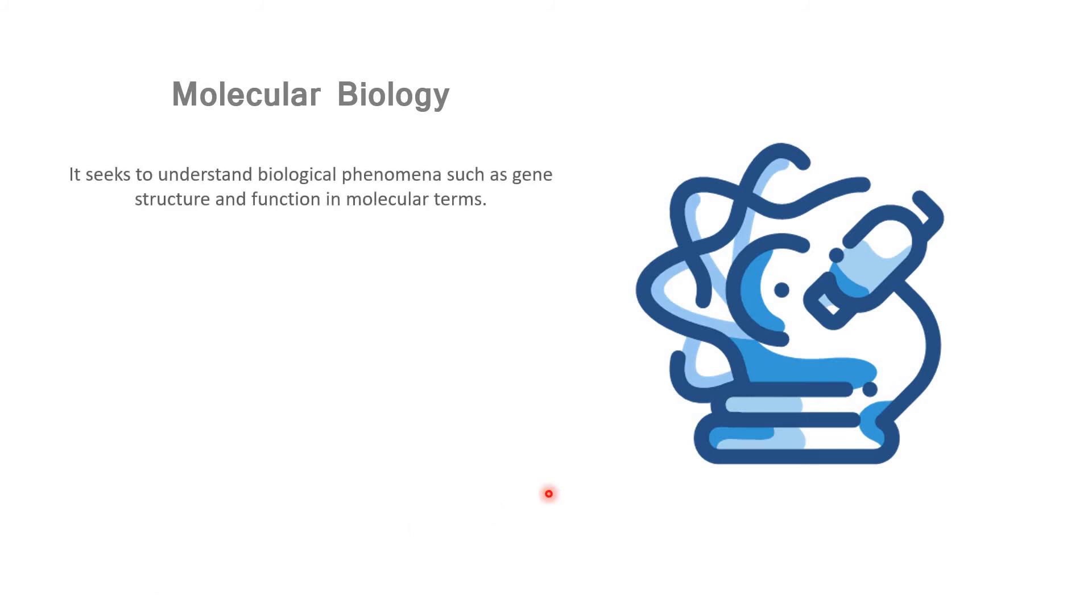Molecular biology seeks to understand biological phenomena such as gene structure and function in molecular terms. We have already said gene functions. Now, how about gene structure? The discovery of the double helical structure of DNA by James Watson and Francis Crick way back - it may seem like that's all they discovered, just the shape, the orientation, the structure of DNA. Actually, it's not just that. Because of that discovery, we were able to understand how it actually works.